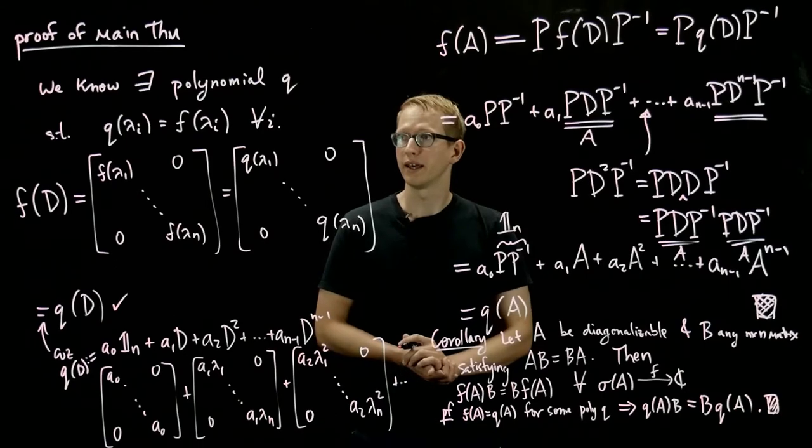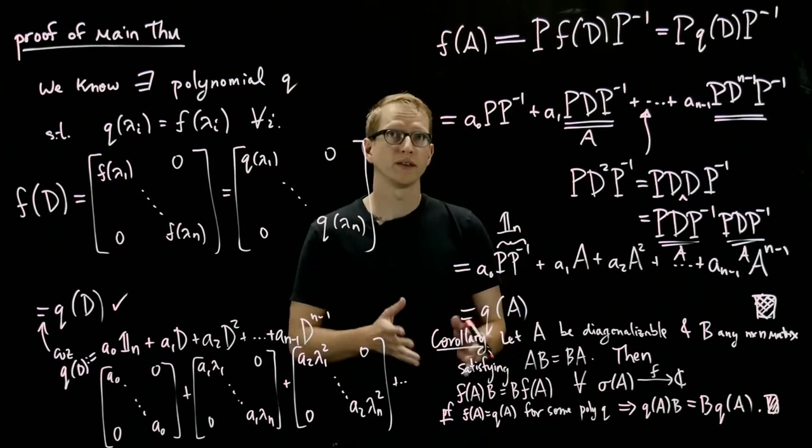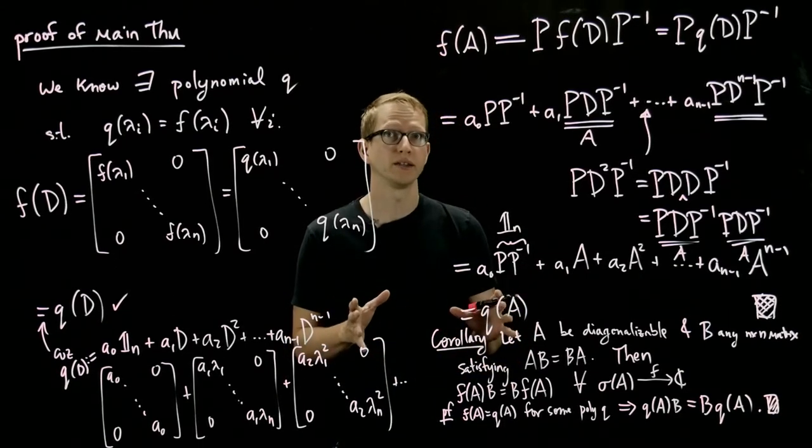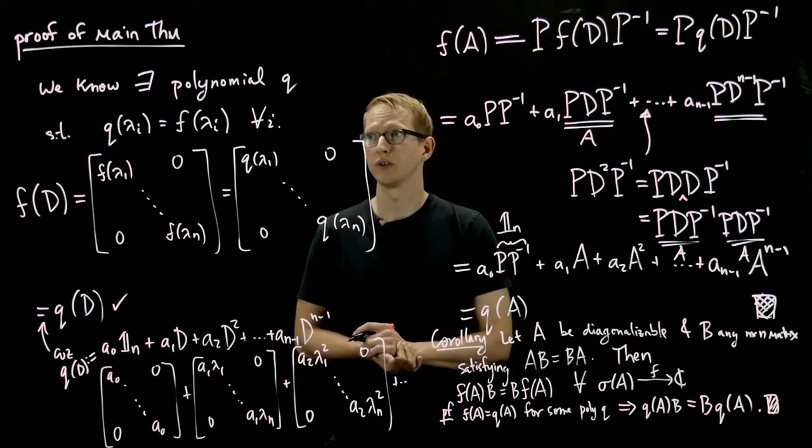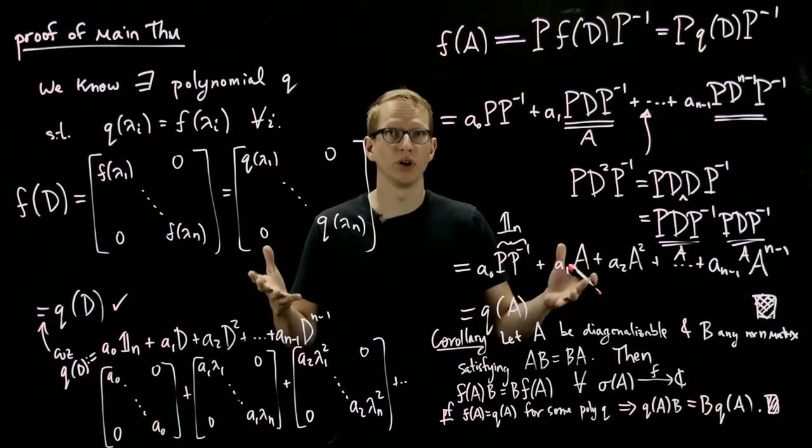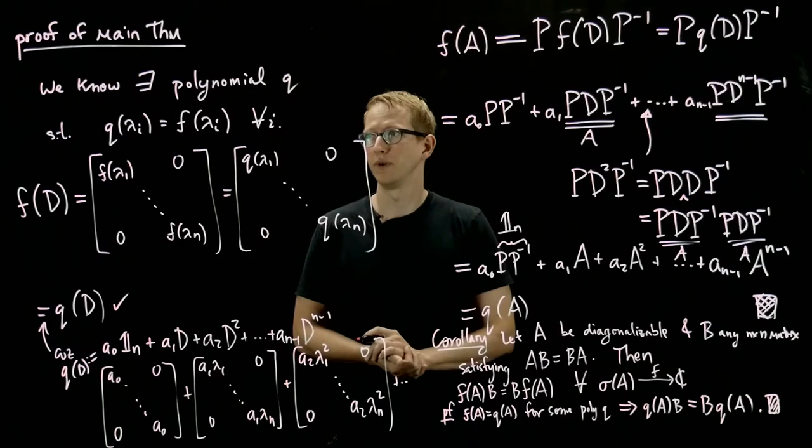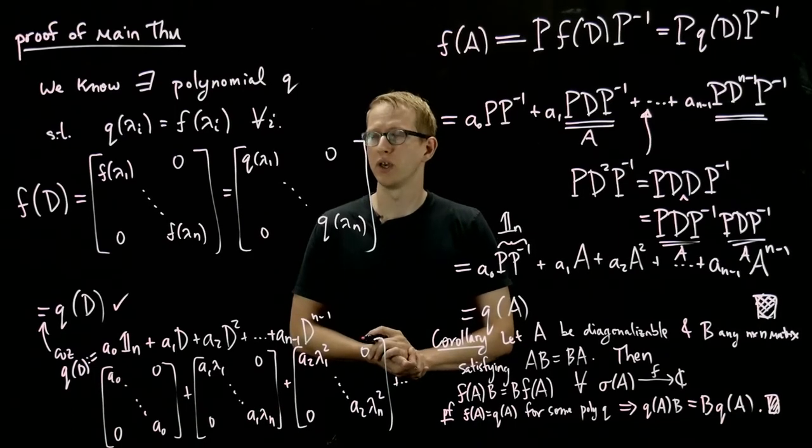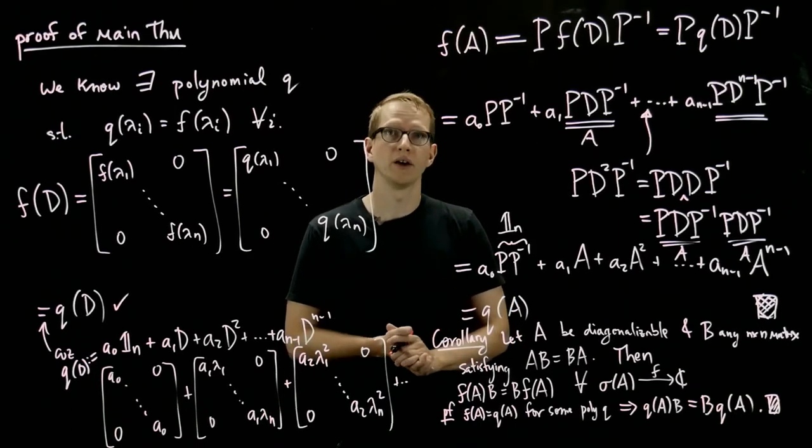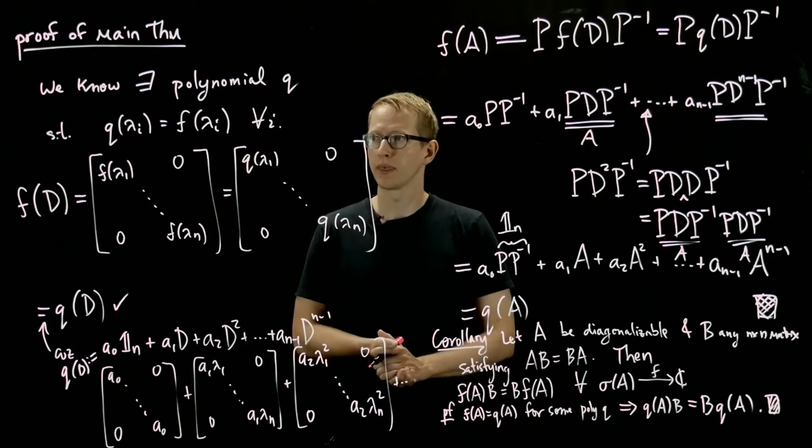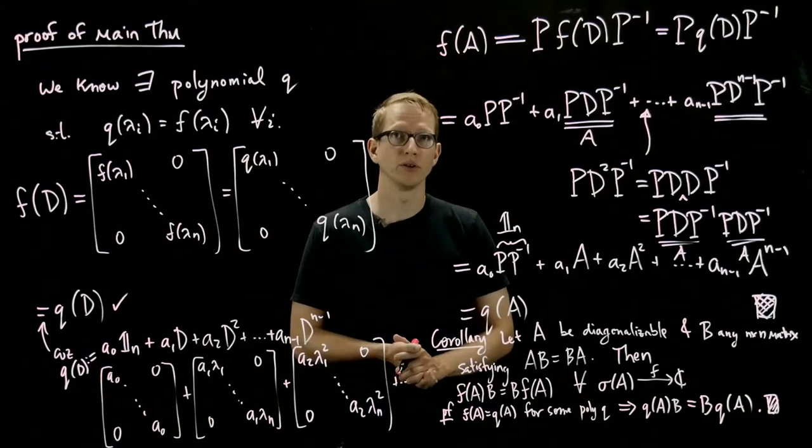Namely, that given any function, at least that's defined on the set of eigenvalues of A, it could be defined on a larger set of the subset of the complex numbers, but at the very least, if it's defined on those eigenvalues, then we can always find a polynomial for which, when we apply that function,